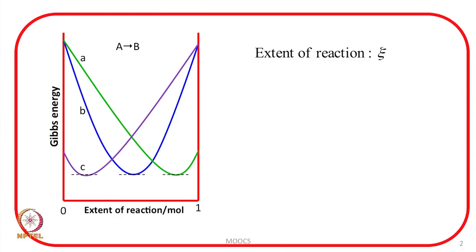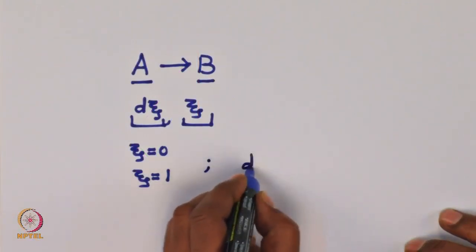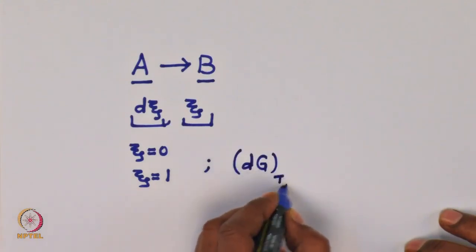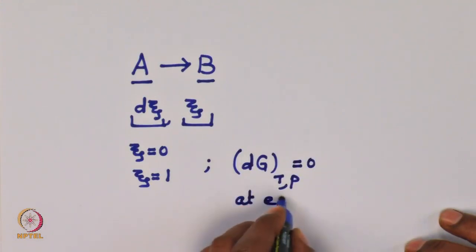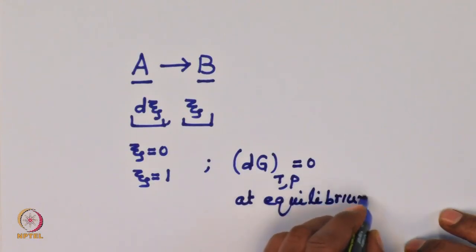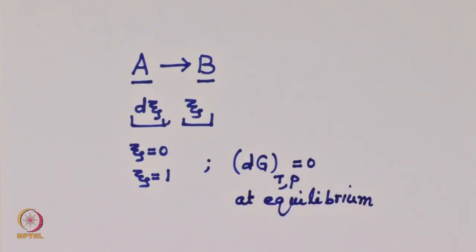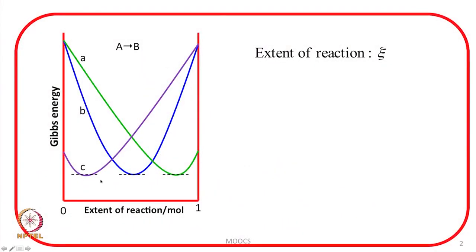Recall our earlier discussion: dG at constant temperature and pressure equals zero at equilibrium. When you plot G against something, the derivative should be equal to zero. So the point in the figure where the slope is zero — that is the position of equilibrium.